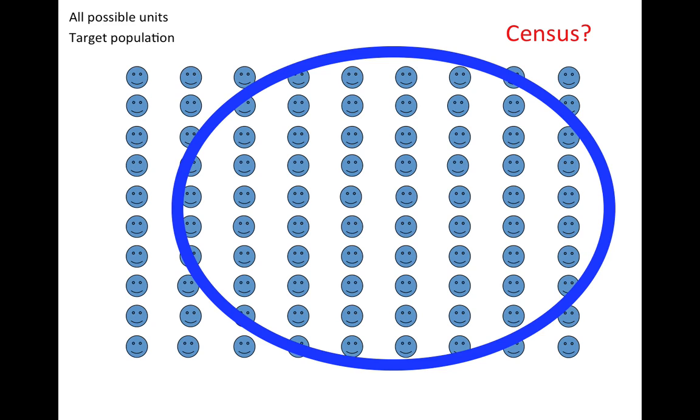The problem with a census is that it's very expensive, it's very difficult, and it's usually impossible to collect information on every single unit in the target population.